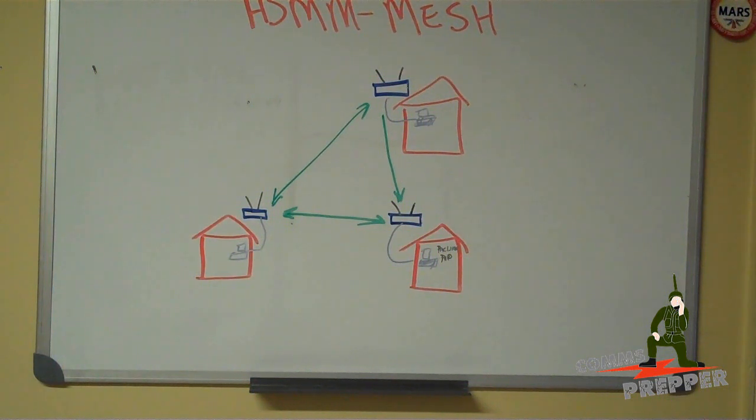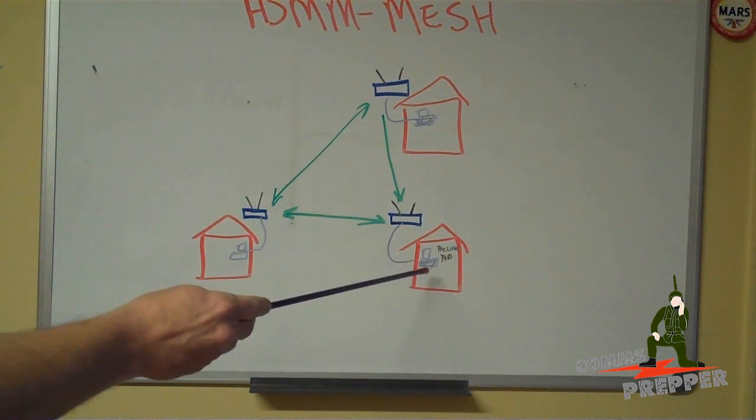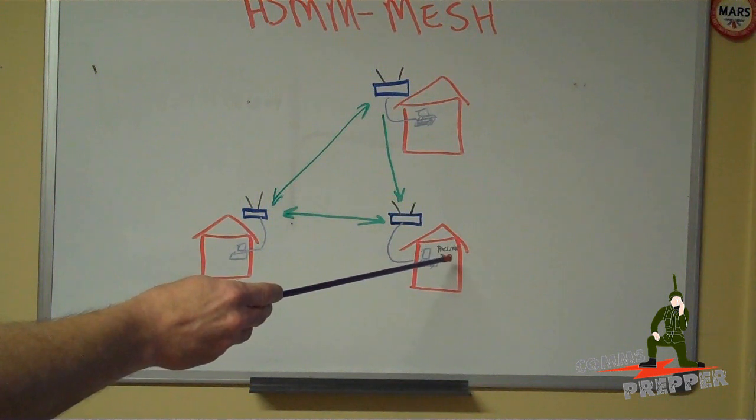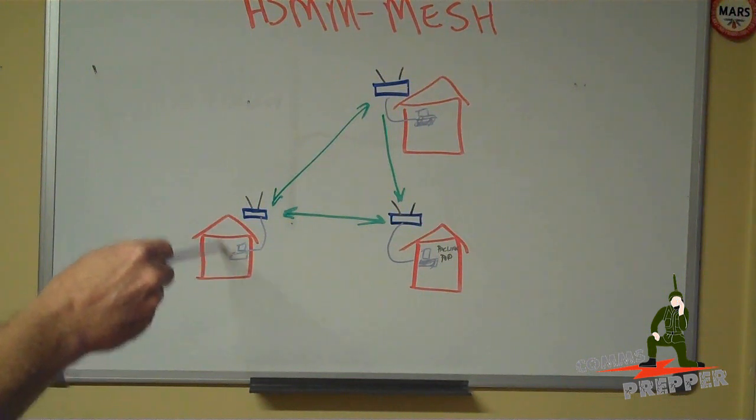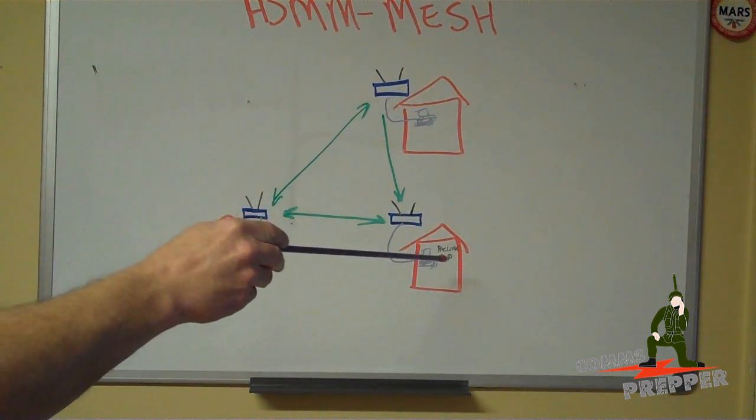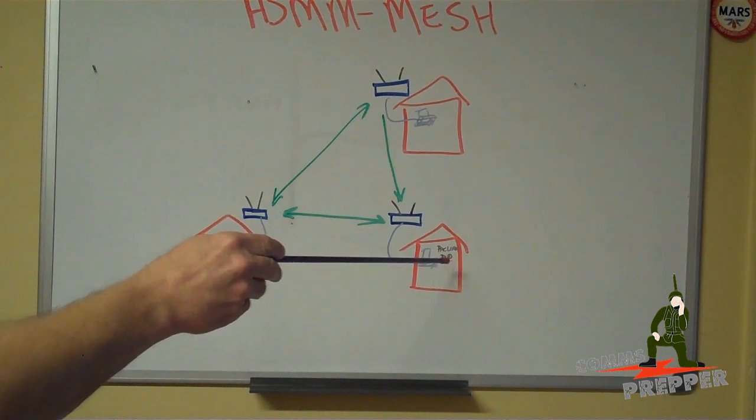So what I set up was a little email server on this laptop here with the PackLink program from winlink.org and then I'm running a POP3 client over here on this side. So anybody who was in this mesh could get an email address off of this PackLink server, what they call tactical addresses.